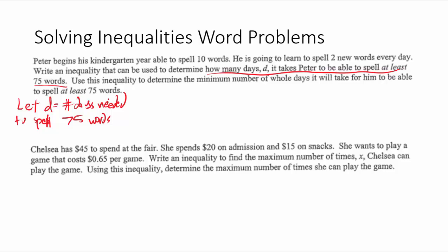Let's turn this into an inequality. The problem gives us a total of 75 — it says at least 75 words. I'm going to put 75 on one side and create an expression for the words Peter can spell. I'll use an equal sign for now and fix it in a second. Peter already knows how to spell 10 words, so we put 10. He's also going to learn two new words every day, giving us plus 2D. So 10 plus 2D equals 75.